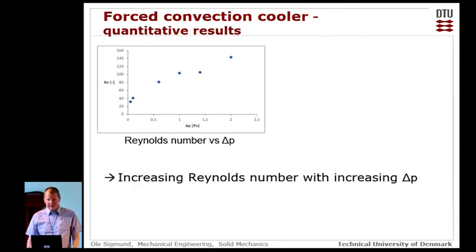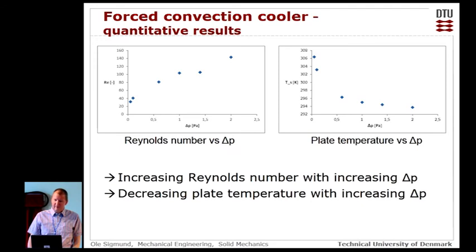So we just looked at the quantitative results, and so obviously we get higher Reynolds numbers with increasing pressure drop, and we get a less plate temperature. But the important part here was that each of these points represent optimized designs, and hence we see that it's fairly consistent. Maybe just this structure was a local optimum, and so we have to redo this example and see. So this would sort of be the upper bound on the possible Reynolds numbers for the prescribed pressure drops.